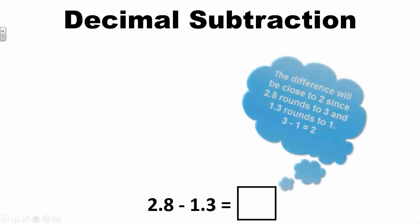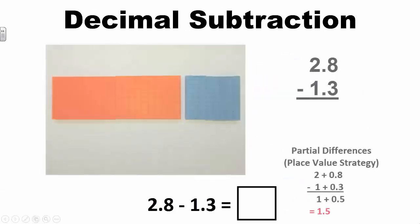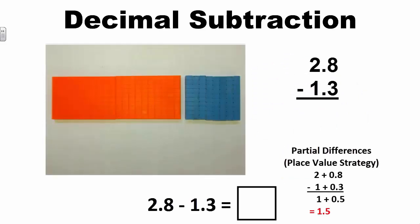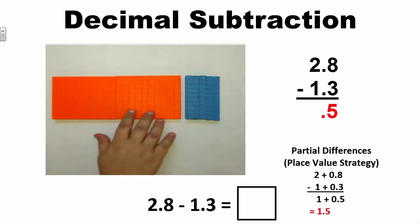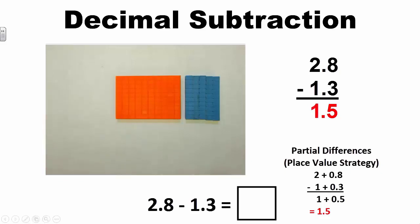Now let's look at an example of a subtraction problem: 2 and 8 tenths minus 1 and 3 tenths. Just as with addition, we need to subtract like place value positions when subtracting. Here, I am showing 2 and 8 tenths. I need to subtract 3 tenths from 8 tenths, and I need to subtract 1 from the 2 wholes. I am left with 1 and 5 tenths. Therefore, 2 and 8 tenths minus 1 and 3 tenths has a difference of 1 and 5 tenths.